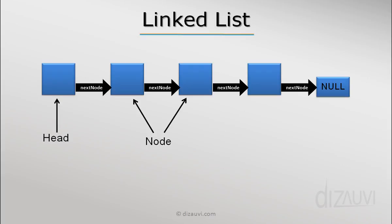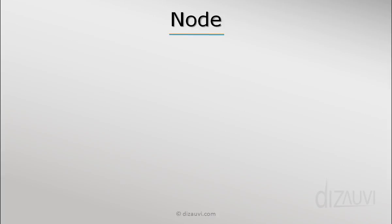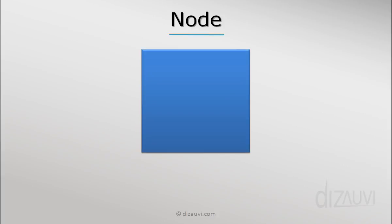Now let's see what a node is. A node in a linked list can be thought of as divided into two parts. One part contains the data, and here data can be anything that we want to store. It may be of primitive type like int, double, etc., or it can be an object reference.